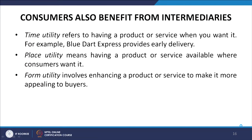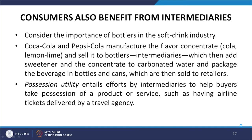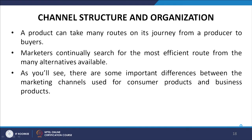Place utility means having a product or service available where a consumer wants it. Form utility involves enhancing a product to make it more appealing to buyers. For example, Coca-Cola and Pepsi-Cola manufacture the flavor concentrate — cola, lemon, lime — and sell it to bottlers, who add sweeteners and carbonated water and package the beverage in bottles and cans for retailers. Possession utility entails efforts by intermediaries to help buyers take possession of a product, such as having airline tickets delivered by a travel agency.